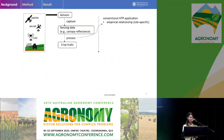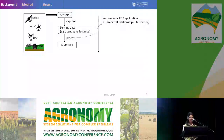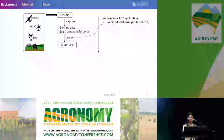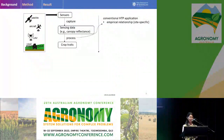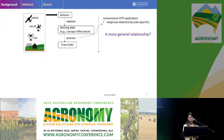The conventional approach is to use measured crop traits and observed sensing data to build an empirical relationship. But the problem is that such a relationship is generally site-specific — it cannot be applied to wider situations that are quite different from the environment used for collecting the data. So what we are thinking about is trying to generate a more general relationship that can be used across wider environments.